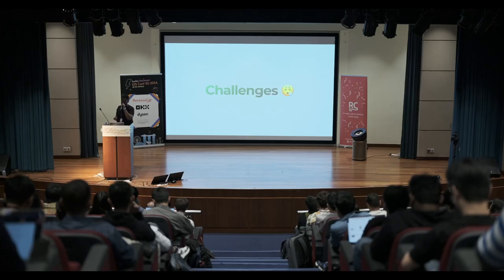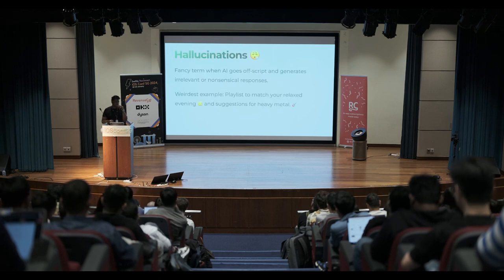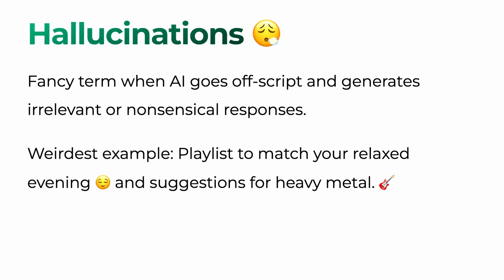While working with trending AI is fun, it comes with its own set of challenges. One of the trickiest was working with hallucinations — a fancy term for when the AI goes off script and generates something irrelevant or nonsensical. For example, the weirdest I got was asking for relaxed evening music and getting suggestions for heavy metal. I mostly solved it by retrying the query, and otherwise experimenting with the prompts again and again until I was confident it would not hallucinate.